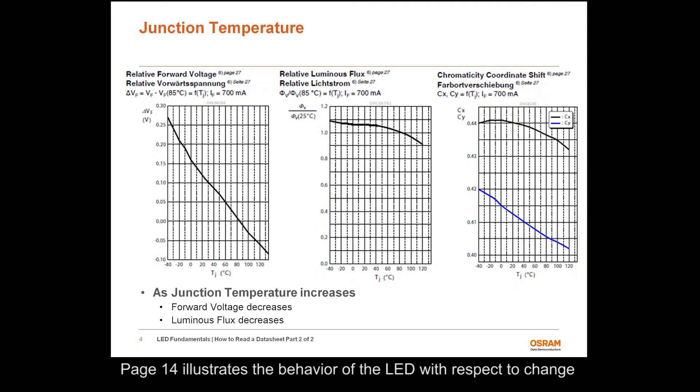Page 14 illustrates the behavior of the LED with respect to change in junction temperature. All curves are shown at the binning current of 700 milliamps. The first graph represents the change in forward voltage with respect to a junction temperature of 85 degrees C. For example, if the LED junction temperature was 25 degrees C, the forward voltage would be 0.11 volts higher compared to the LED at a junction temperature of 85 degrees C.